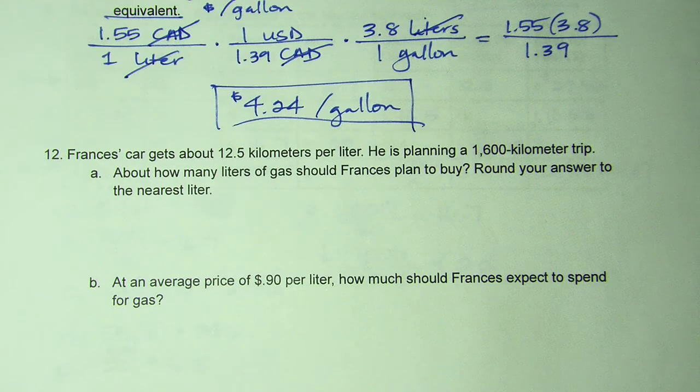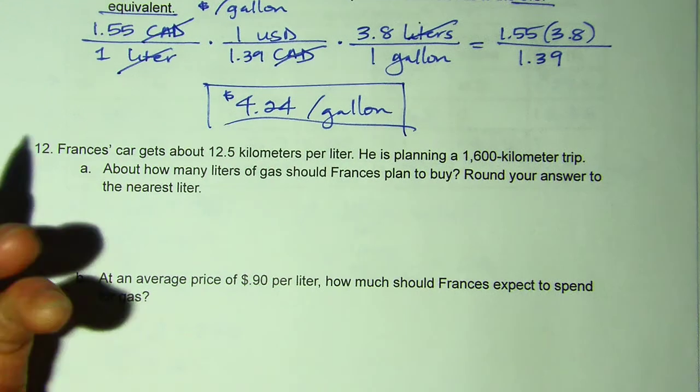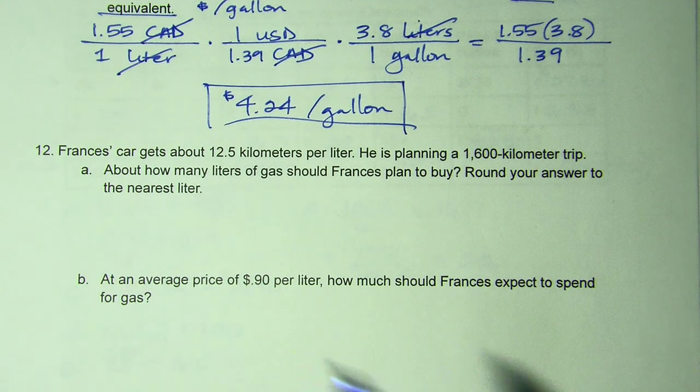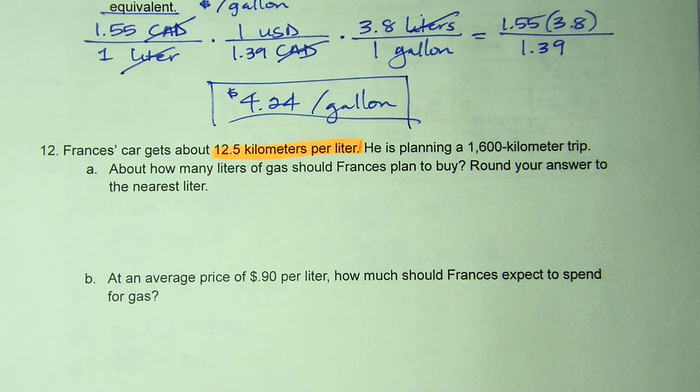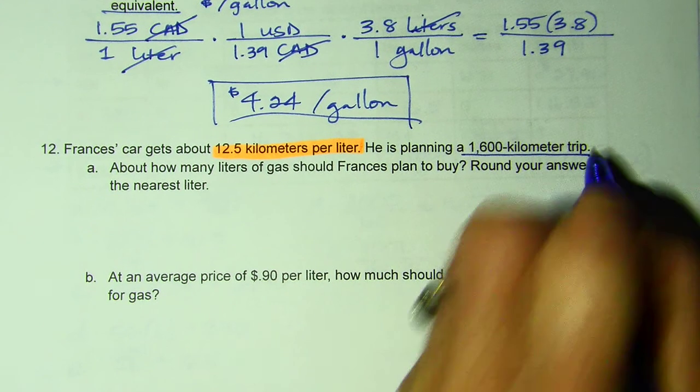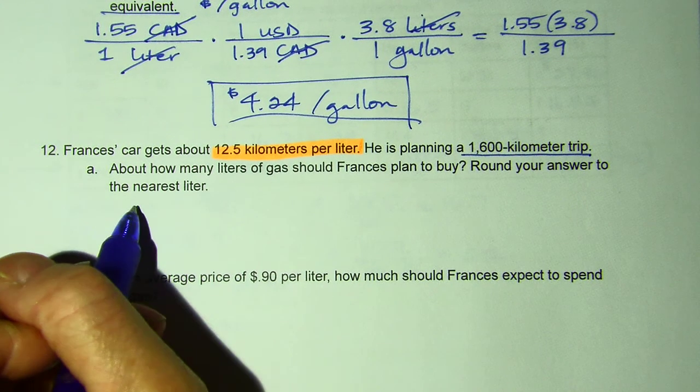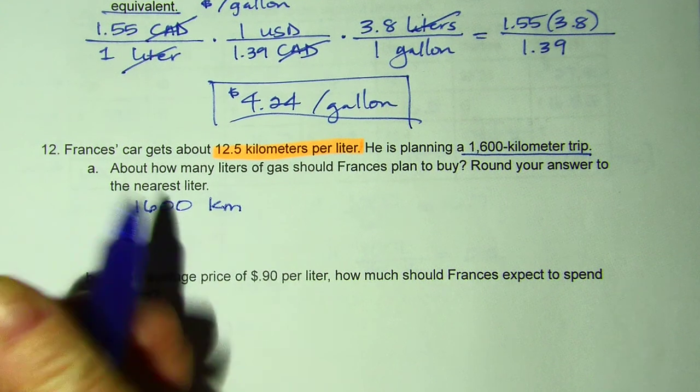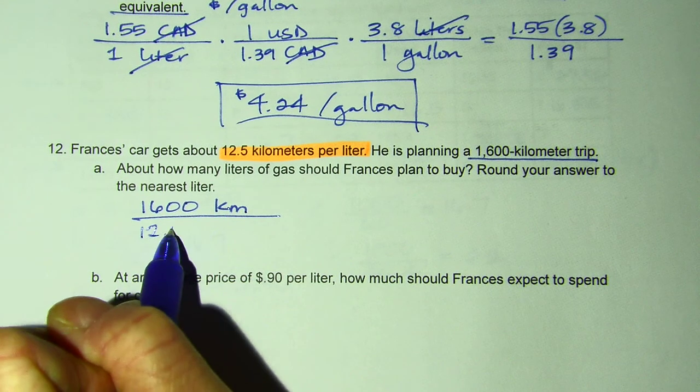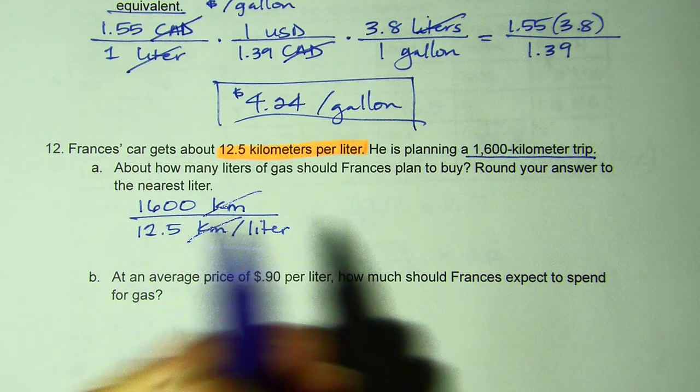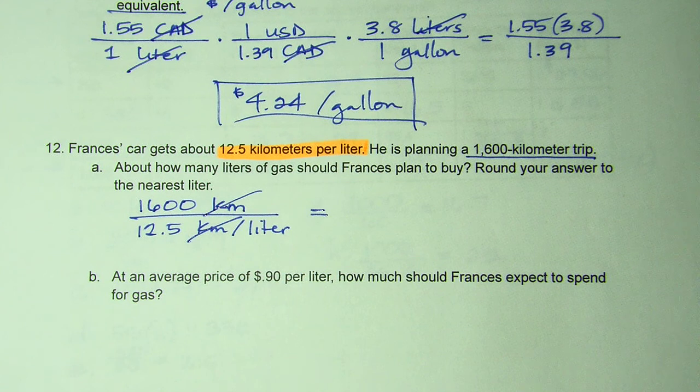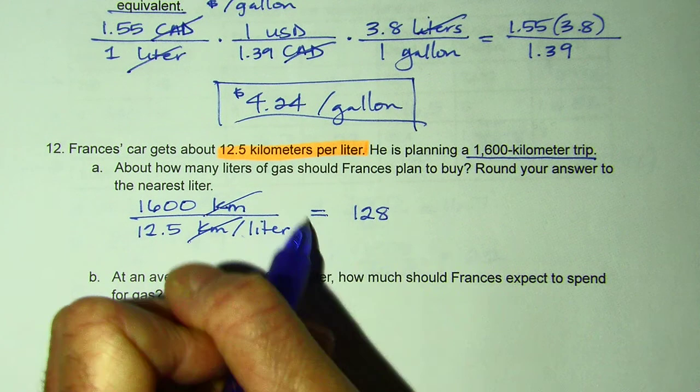So next is having to do with kilometers. It says his car gets 12.5 kilometers per liter. So in Europe they use kilometers versus here in the United States we use miles. So different ways to measure distance. He is planning a 1,600 kilometer trip. So how many liters of gas should he buy? So if he's going to travel 1,600 kilometers divided by 12.5 kilometers per liter. Notice the kilometers cancel. And I'm going to be left with 1,600 divided by 12.5. And the only word left is liters.